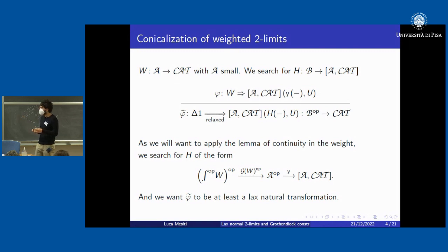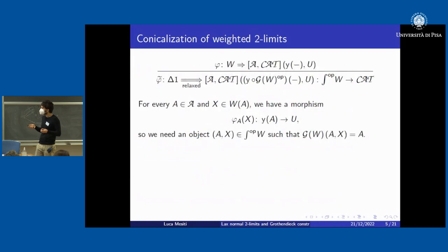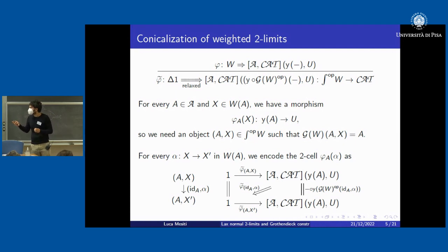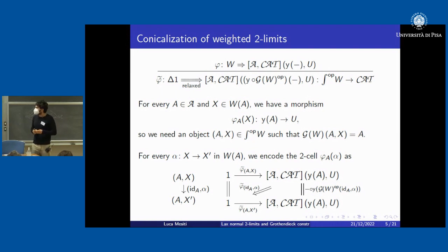That something will be an extended version of the Grothendieck construction. For every a in A and every x in W(a), phi gives us a morphism from the unit of a to u. We want to build a cocone with exactly these morphisms, so the objects of the two categories we construct parameterize all of these — we call them (a, x). They project down to a, and admitting two-cells inside phi-tilde, we ask it to be at least a lax natural transformation.